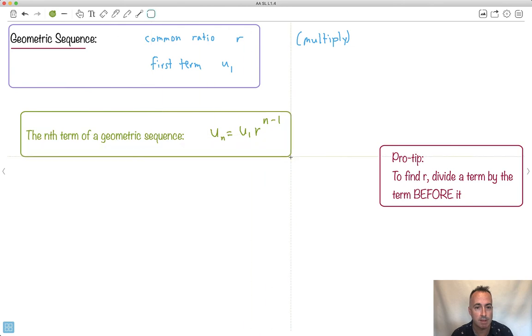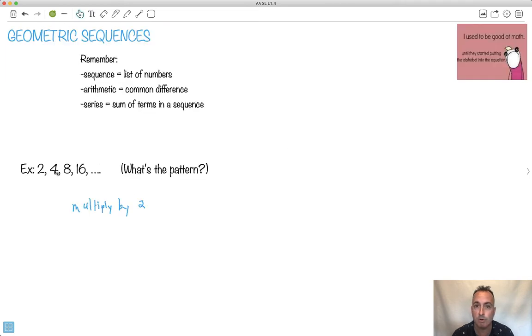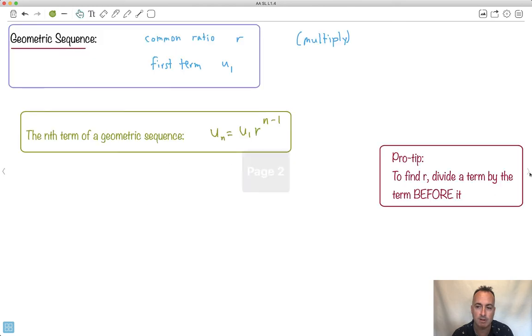So if you want to find like the 5000th term, just put in 5000 here. Watch out very carefully here - you do not do U1 times R. You have to first do R to this power and then times U1. Now to find R, this is a pro tip: you're going to divide any term by the number before it. So if we were going to find this one here, we would do 4 divided by 2 and that would give us 2. But 8 divided by 4 also gives us 2, and 16 over 8 also gives us 2. That's how we can find R.